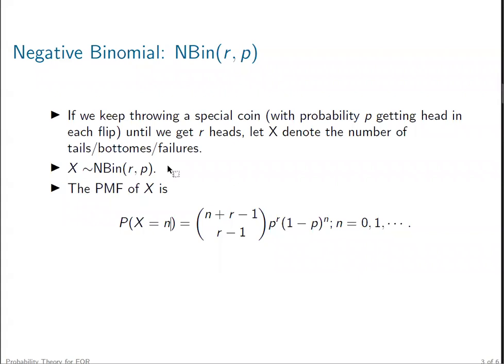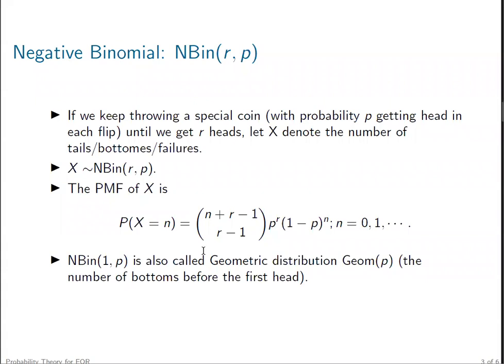If we stop until we get 1 head, that is the negative binomial distributed random variable with r=1 and successful rate p. This is called a geometric distribution with successful rate p, which denotes the number of tails before the first head.